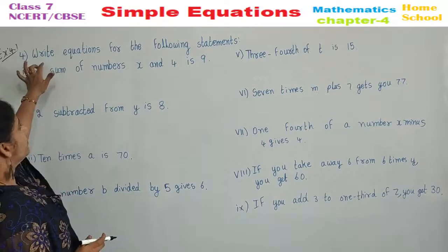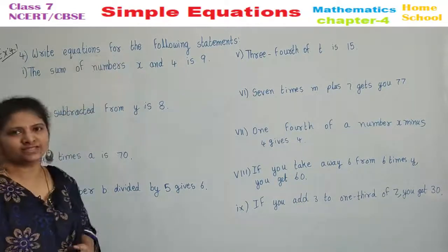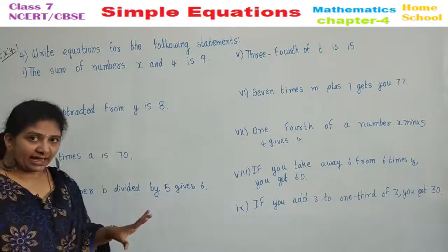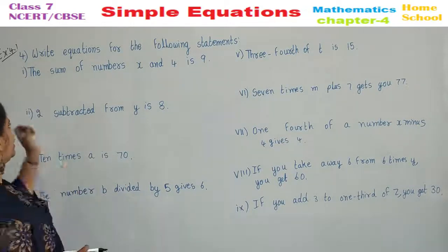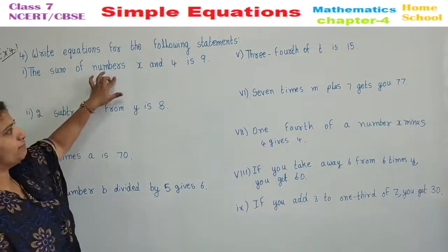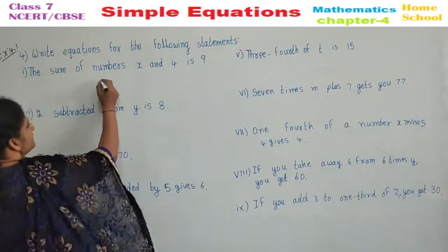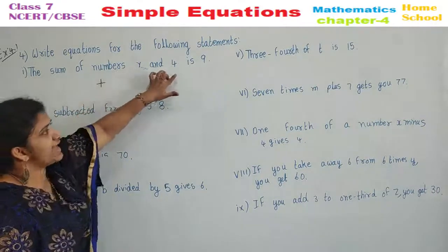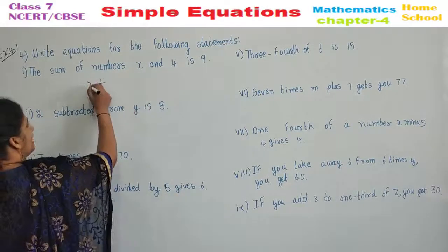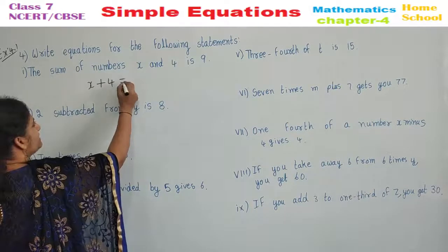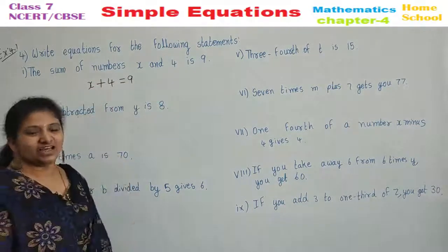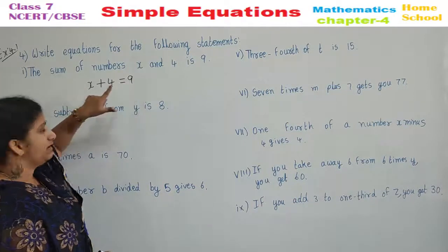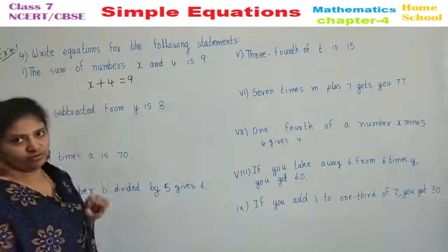See the fourth problem. Write equations for the following statements. Here you can see some statements. By saying that we need to write in equation form. First one. The sum of numbers. Sum itself is a plus sign. Sum of numbers X and 4. What are the two numbers? X and 4. Is means equal to. I repeat. Sum of two numbers is 9. X plus 4 is equal to 9.